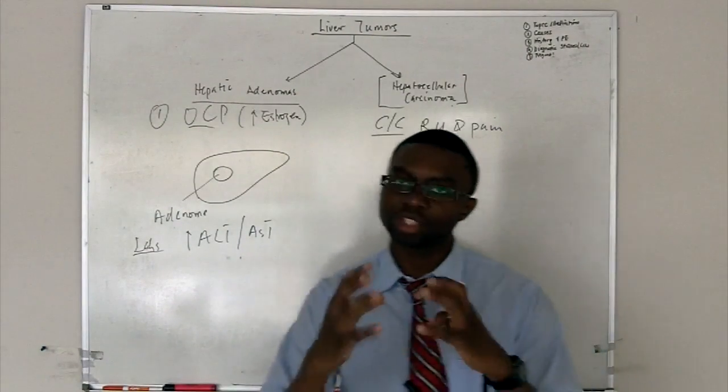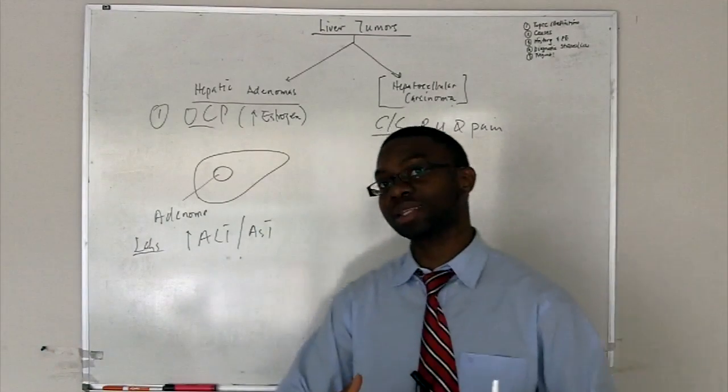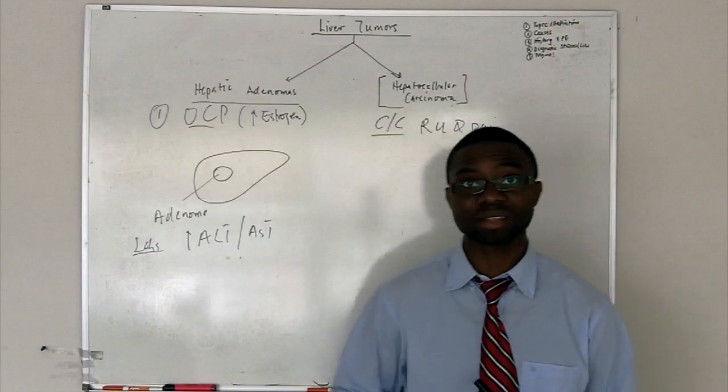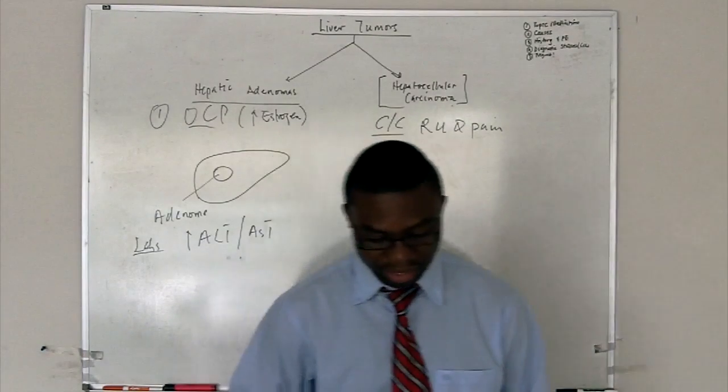Right upper quadrant tenderness, the abdomen is going to be distended. Remember the liver is shrunk now. It's cirrhotic. Now they develop a lot of ascites. You have to watch the video on liver function test to be able to understand this concept. Why? They develop a lot of ascites.